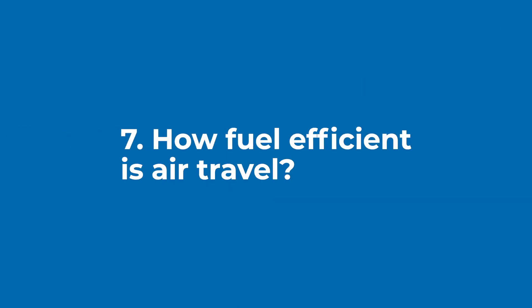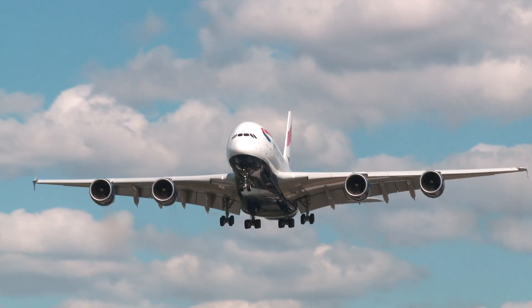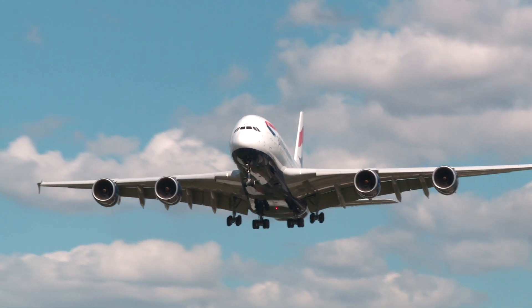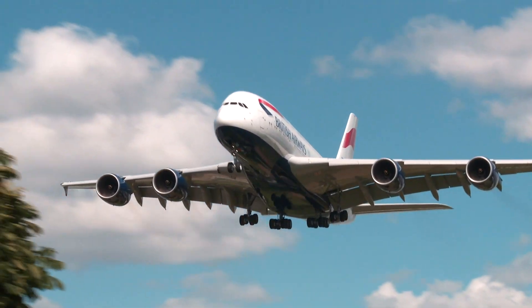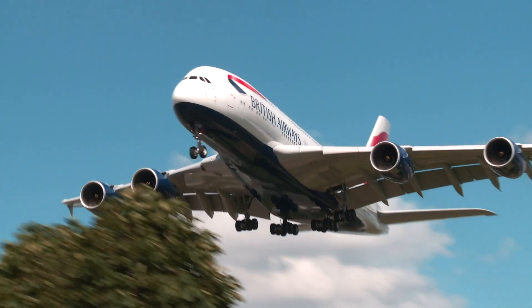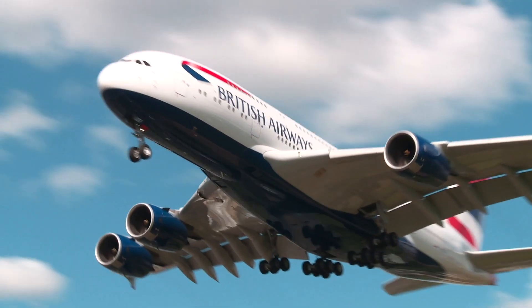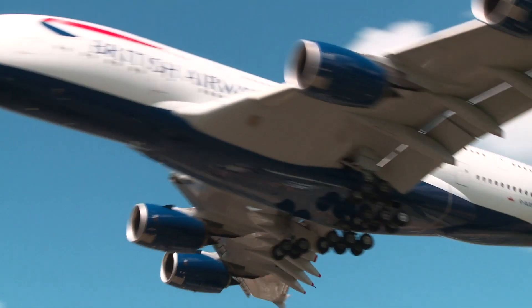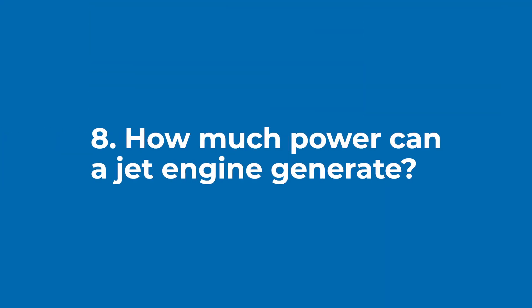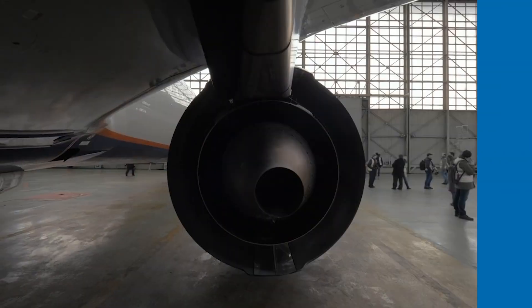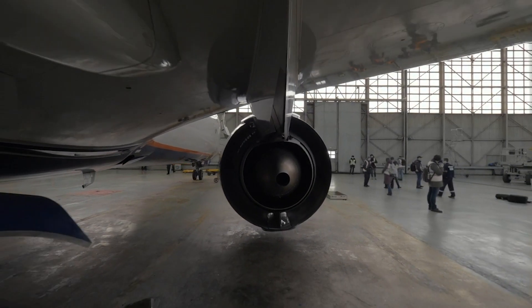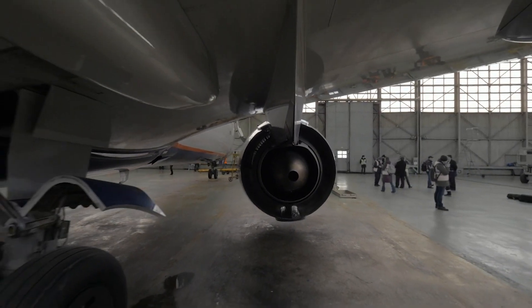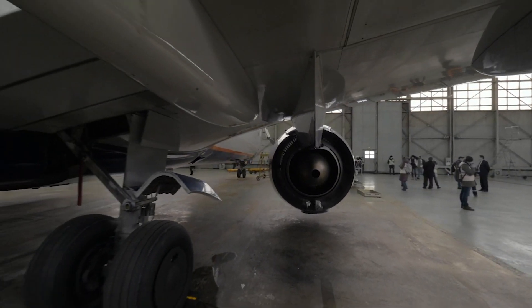How fuel efficient is air travel? Large capacity jetliners use less than 3 liters of fuel per 100 passenger kilometers, matching the fuel efficiency of most modern compact cars. How much power can a jet engine generate? The engines of an Airbus A320 can generate enough electricity to power a city of over 60,000 people.